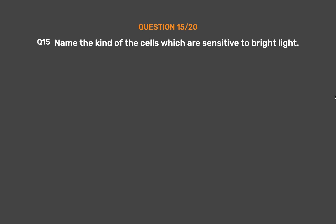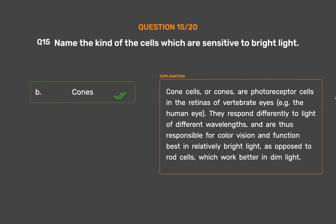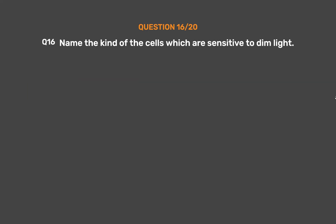Question number 15: Name the kind of cells which are sensitive to bright light. Option A: Rods. Option B: Cones. Option C: Both A and B. Option D: None of these. The correct answer is Option B, Cones. Cone cells are photoreceptor cells in the retinas of vertebrate eyes. They respond differently to light of different wavelengths and are responsible for color vision, functioning best in relatively bright light, as opposed to rod cells which work better in dim light.